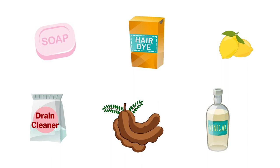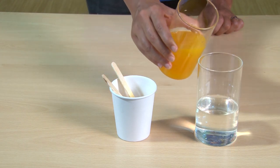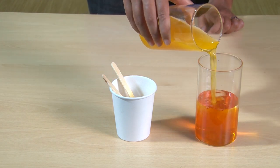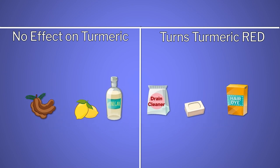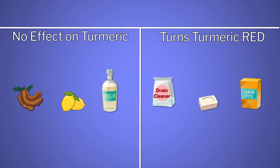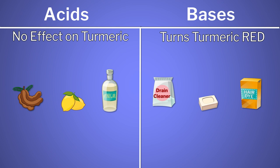We dissolved some turmeric in water and took household items like tamarind, garlic, salt, soap, baking soda, vinegar, lemon, etc. for testing. We took turmeric solution in different flasks and tested all of these substances one by one. I asked my students to divide these substances into two groups: one which turned the turmeric solution red and one which did not. This helped them understand the difference between acids and bases and distinctly talk about their properties. I had asked them to note down their observations and explain them with reasoning.